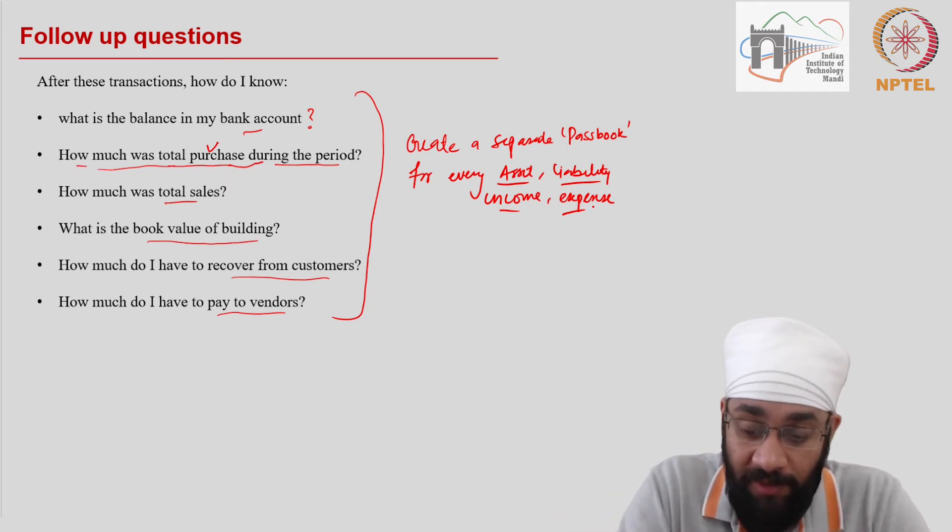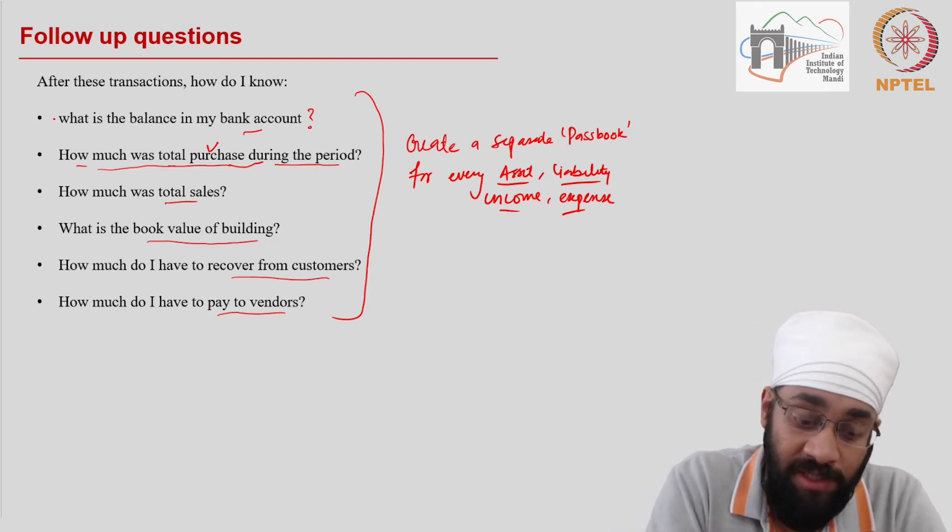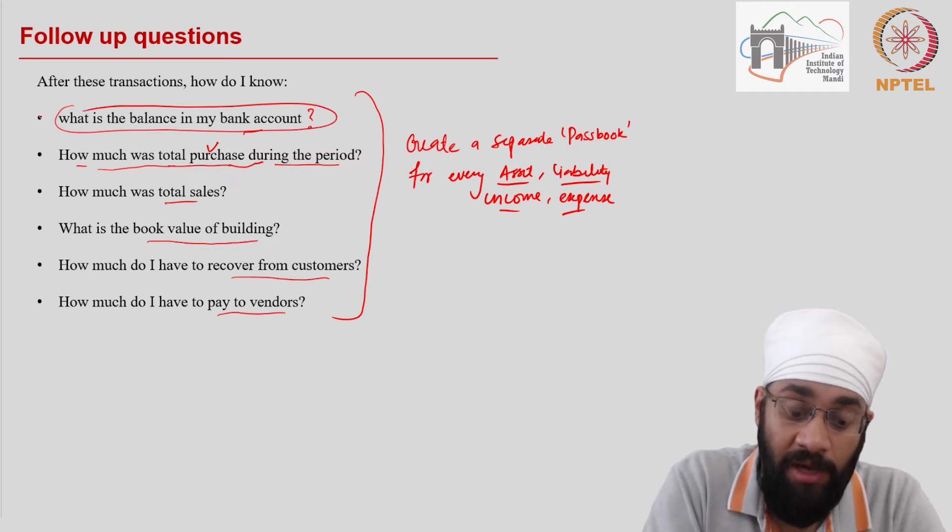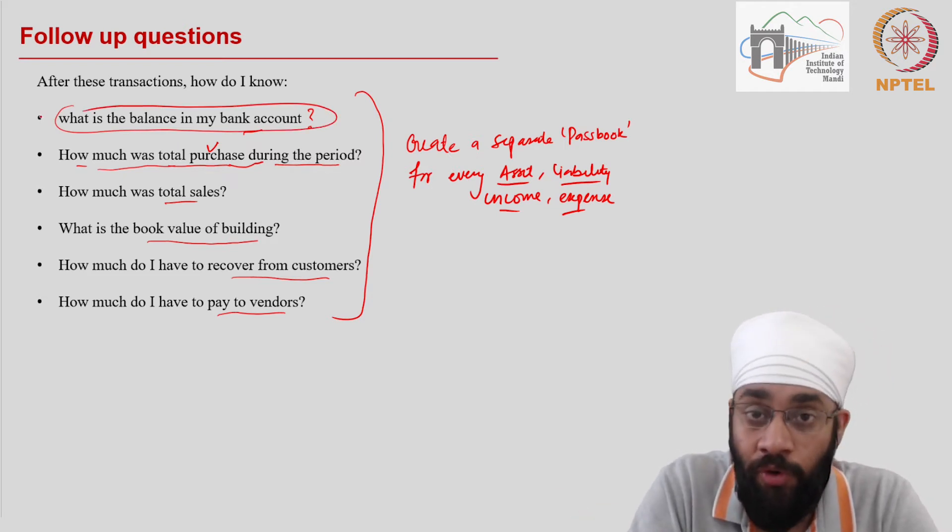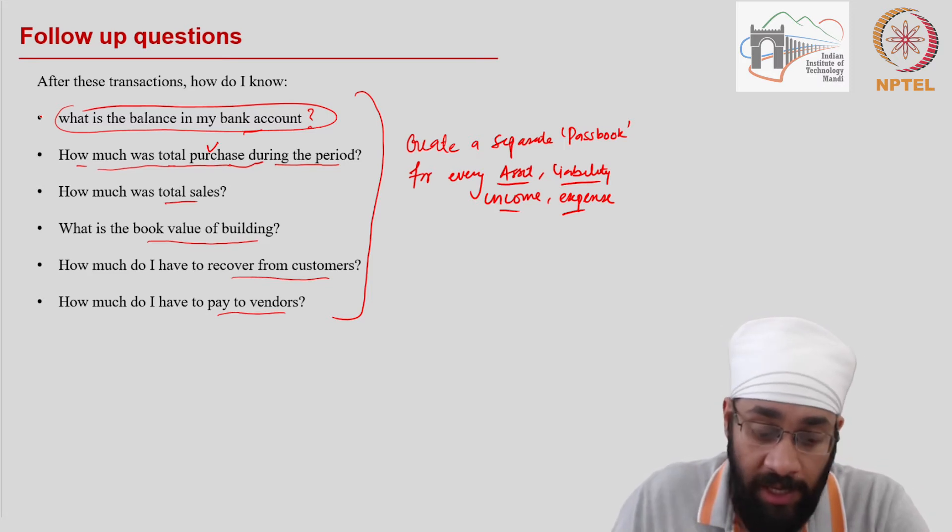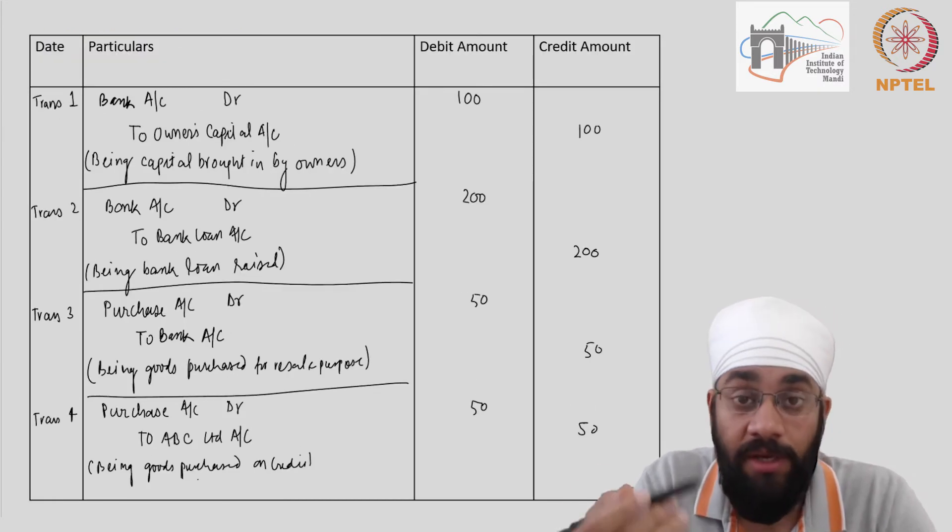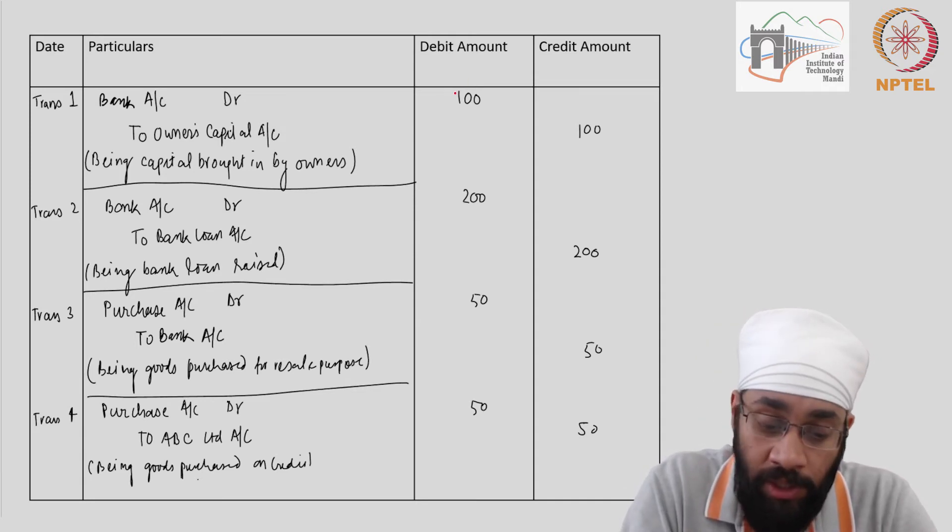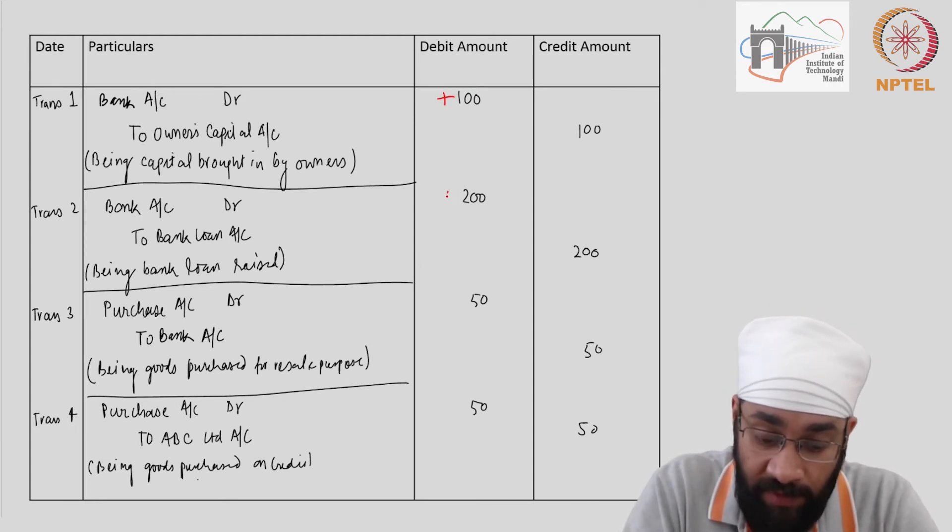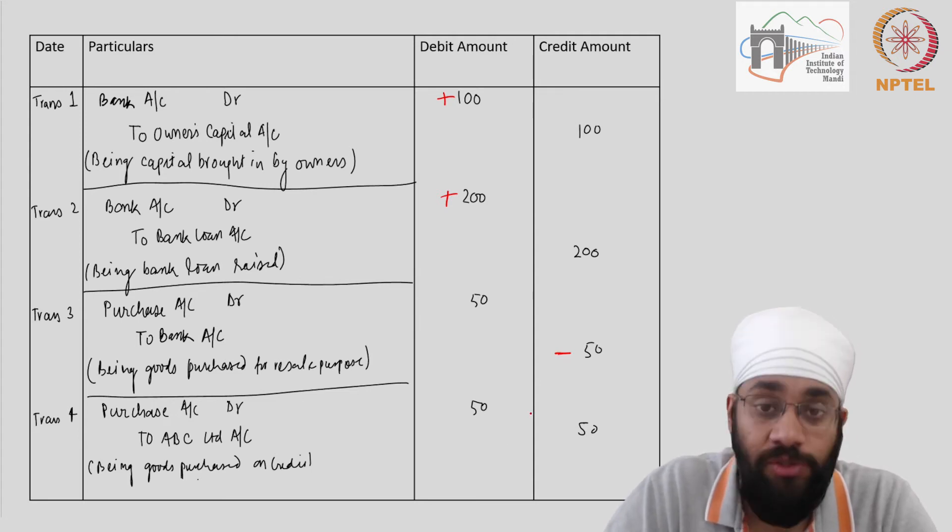Right now in the 14 transactions that we have, if I have to answer this first question here I could of course go to bank but I could also look through my transactions. If I look through the transactions I would say which journal entries involve payment through bank or receipts in the bank. So I have this 100 which is coming in so plus 100 then plus 200 then this is a minus 50 and so on.